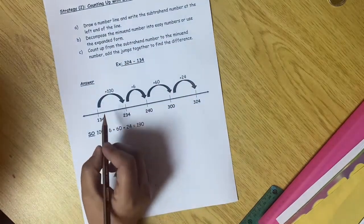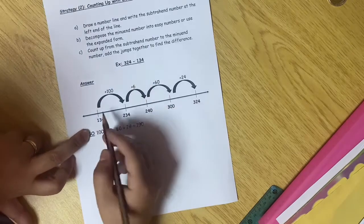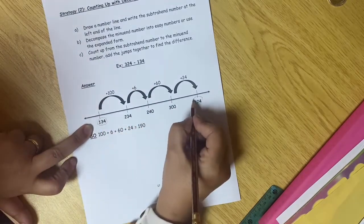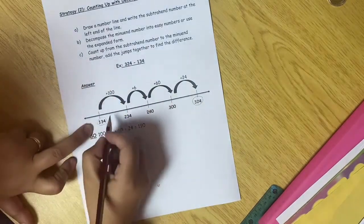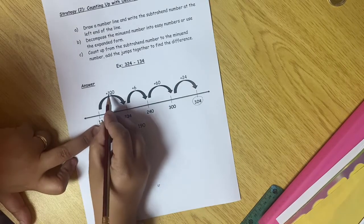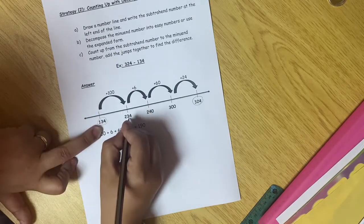Here, we are going to put the two numbers on the number line, the subtrahend and the minuend at the end. And then, here I will look 134, I add it to plus 100, so I get 234.